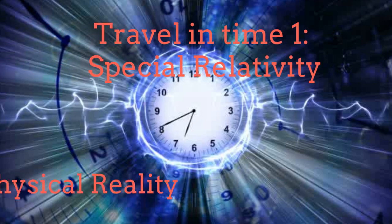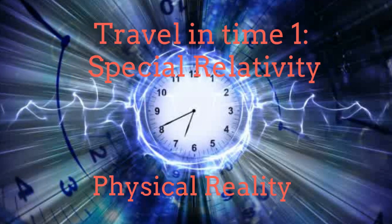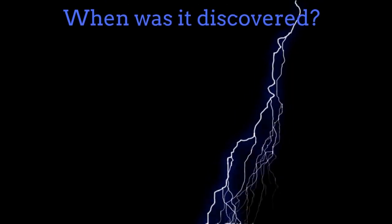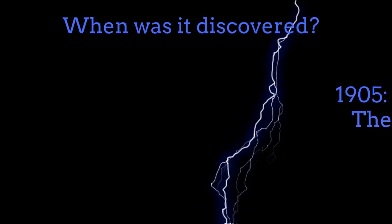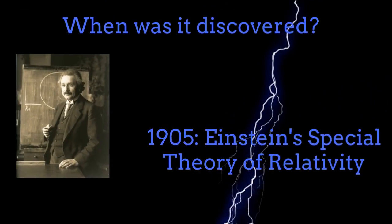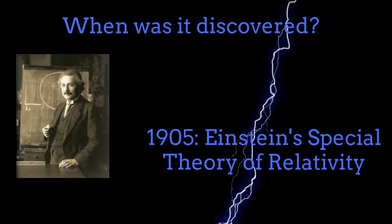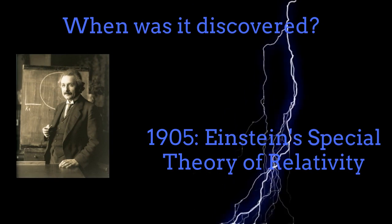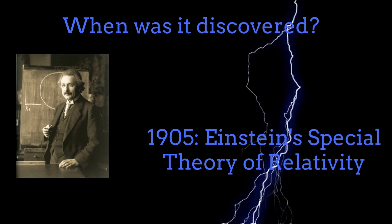This is the first chapter about the physical reality of traveling in time. The possibility of traveling in time was discovered by Albert Einstein in 1905 in his famous theory of special relativity.